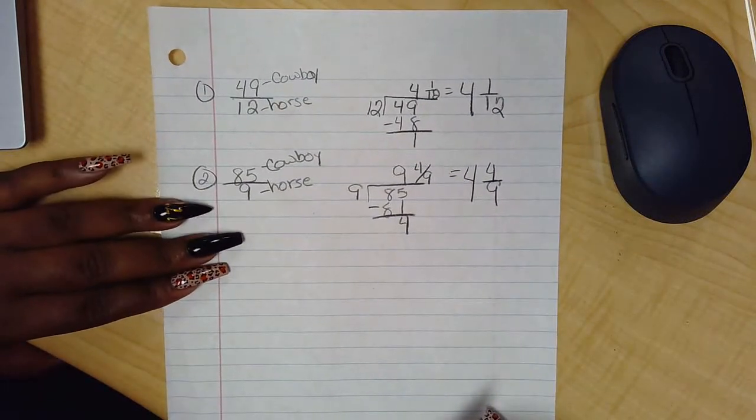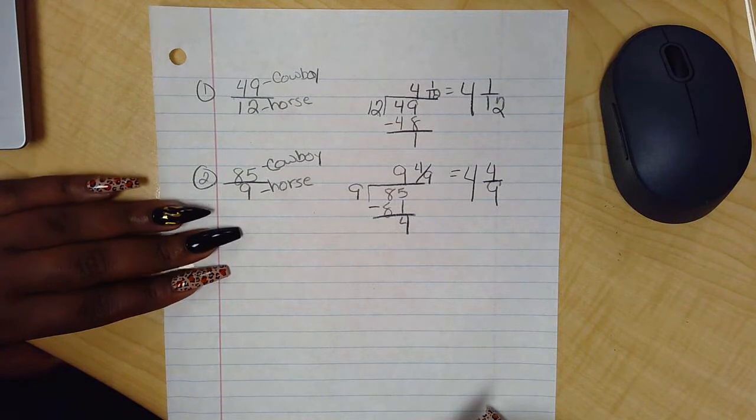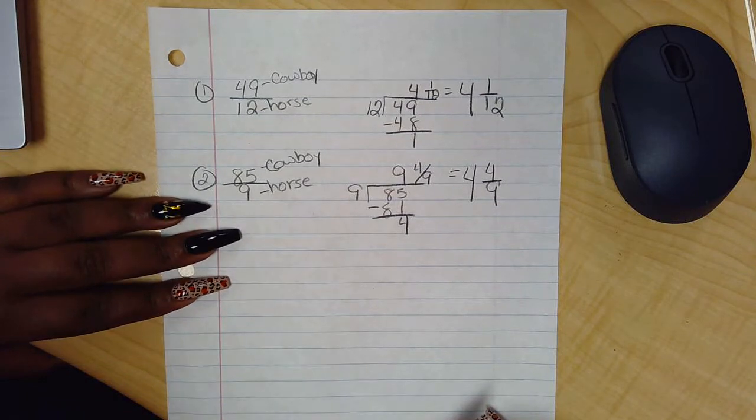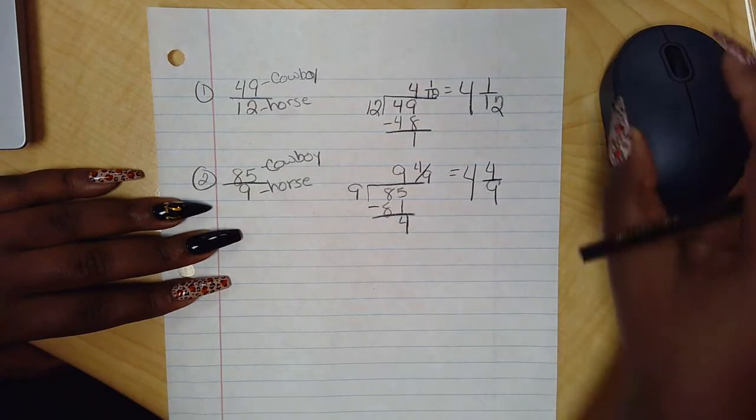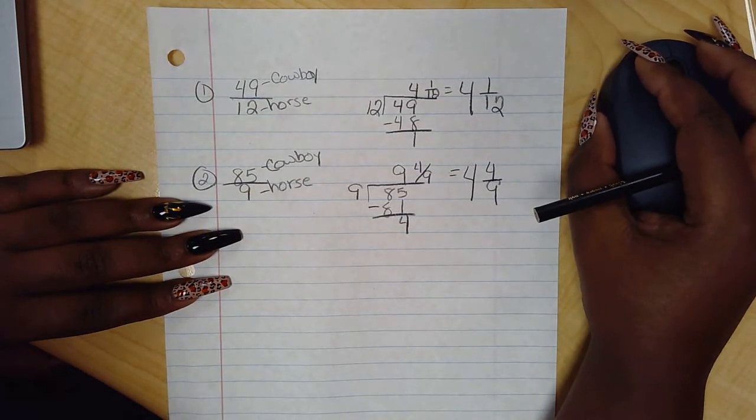So as it goes, that is how to turn an improper fraction into a mixed number. Remember, this is fourth grade material.